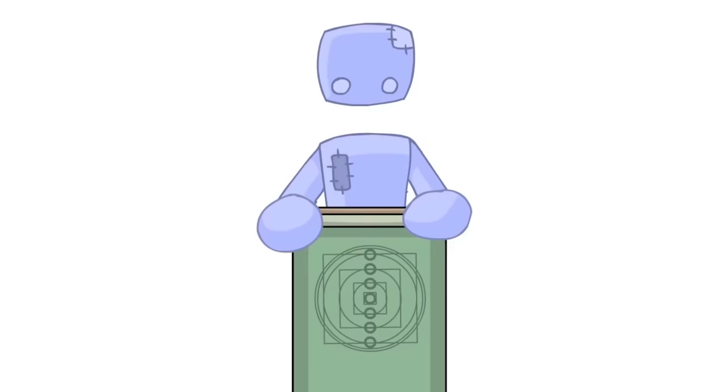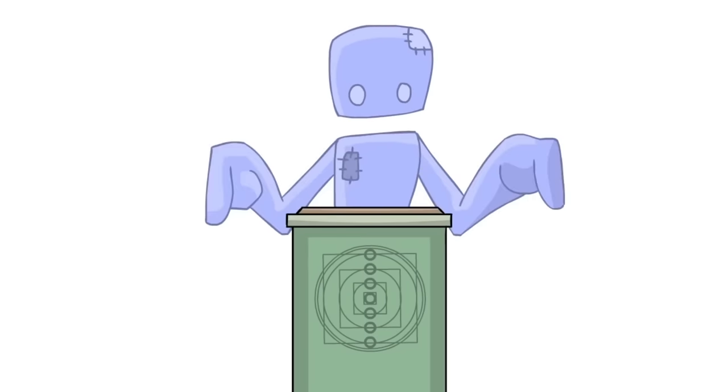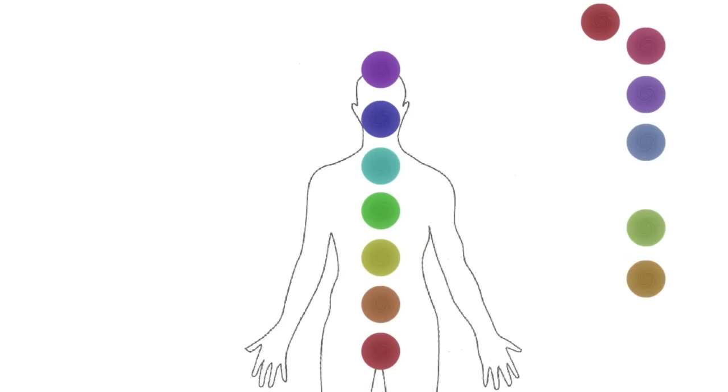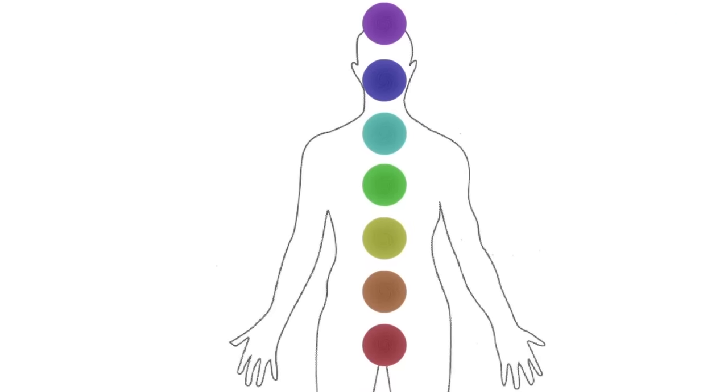Right, so chakras are energy points that run vertically from the top of your head down your spine. Depending on how you look at it, there are 7, 8, or 13 primary chakras, as well as over hundreds of smaller, less important ones that are just scattered around the body. I'm going to cover the 8 and 13 later on, so for now let's just stick with the basic 7.